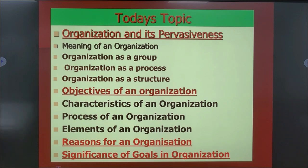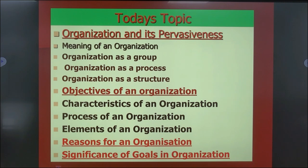If corruption is there, then there is some lacuna definitely in the process and working of the organization. When every part of the organization works in the interests of the enterprise, corruption cannot exist. In a good organization, when all activities run in a systematic way and all the employees perform their duties without interruption, not only production and marketing can be balanced but also income and expenditure can be balanced. This will give a balance and all-round development to the business.